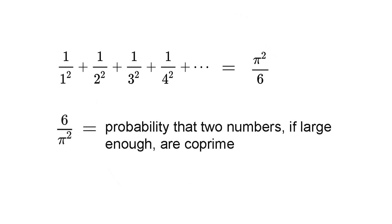Turn this fraction upside down, and we get 6 over pi squared, which is equal to the probability that two numbers, providing they're big enough, are coprime, in other words, that they have no common factors other than 1.